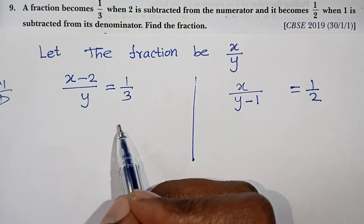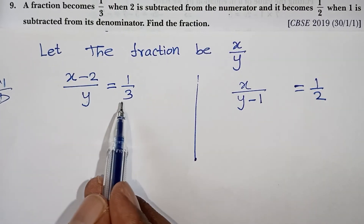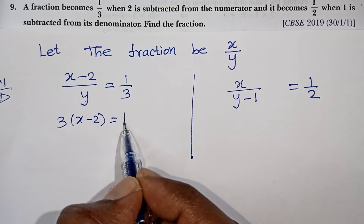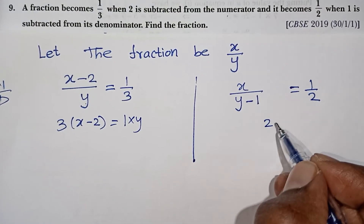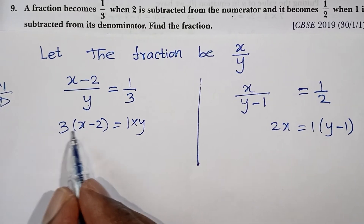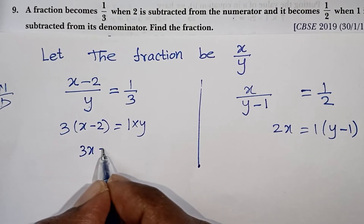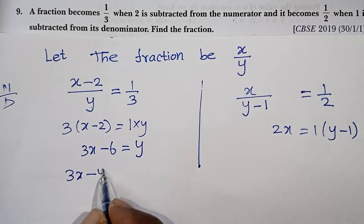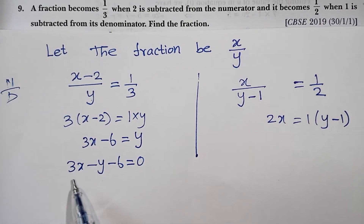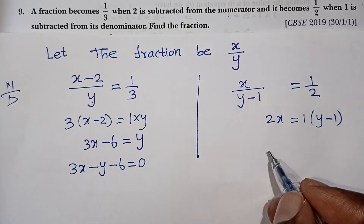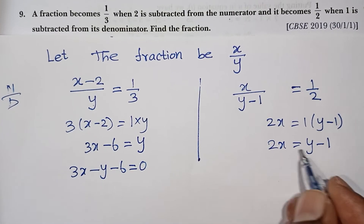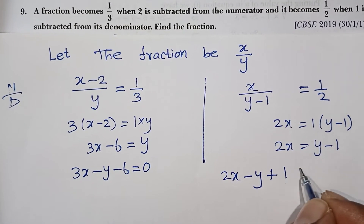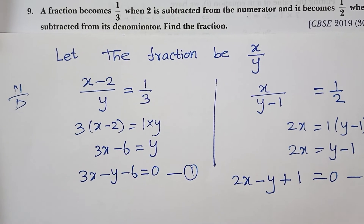Cross-multiplying, we get the first equation: 3 into x minus 2 equals 1 into y, which gives 3x minus y minus 6 equals 0. The second equation: 2 into x equals 1 into y minus 1, which gives 2x minus y minus 1 equals 0. These are our two equations to solve.